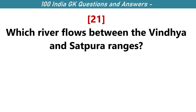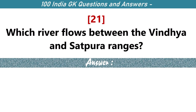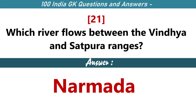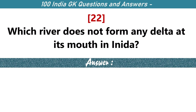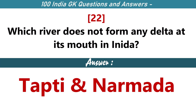Which river flows between the Vindhya and Satpura Ranges? Narmada. Which river does not form any delta at its mouth in India? Tapti and Narmada.